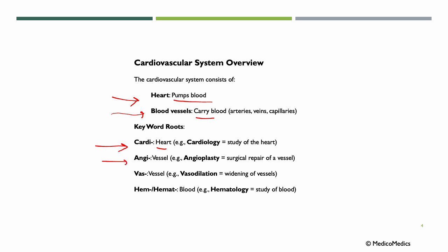We have the word root ANGI, which means vessel. ANGIOPLASTY means the surgical repair of a vessel — PLASTY comes from repair, and ANGI is vessel, giving us ANGIOPLASTY. We also have the word root VAS, which also means vessel. VASODILATION means widening of the vessels — VAS is vessel, and O is the combining vowel, so VASODILATION is the widening of vessels. We also have HEME, HEMA, or HEMAT, meaning blood. Adding LOGI and the combining vowel O, we have HEMATOLOGY, the study of blood.